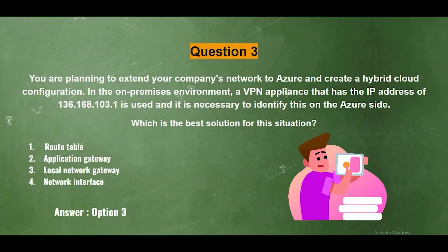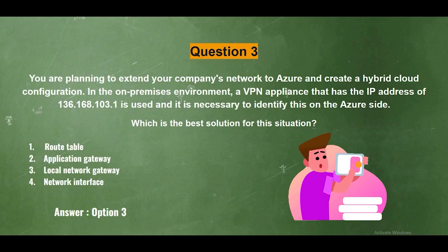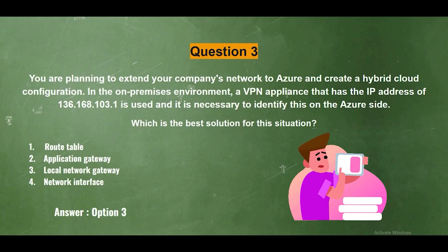Question 3. You are planning to extend your company's network to Azure and create a hybrid cloud configuration. In the on-premises environment, a VPN appliance with the IP address 136.168.103.1 is used, and it is necessary to identify this on the Azure side. Which is the best solution? The options are: Number 1, Route Table; Number 2, Application Gateway; Number 3, Local Network Gateway; Number 4, Network Interface. The correct answer is option three.